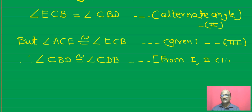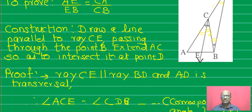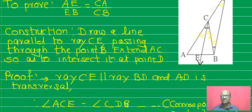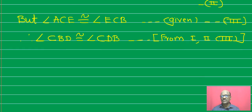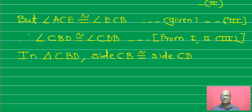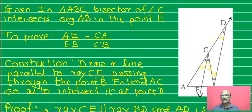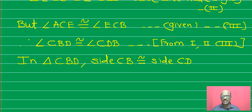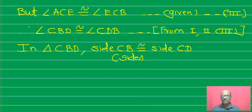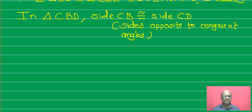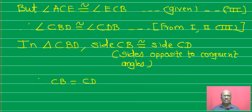From statements 1, 2, and 3, all these angles are congruent. Therefore triangle CBD is an isosceles triangle. In triangle CBD, side CB is congruent to side CD, because these two sides are opposite to two congruent angles — the sides opposite to congruent angles are congruent. Therefore CB equals CD.